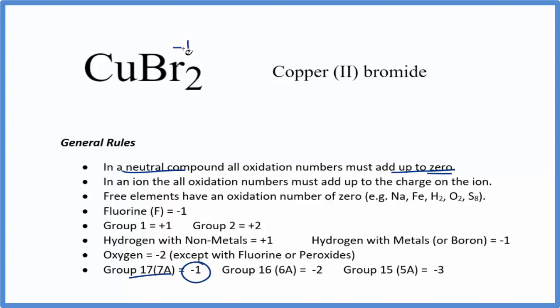So each bromine is minus 1. That means here we have 2 times minus 1, that's minus 2.